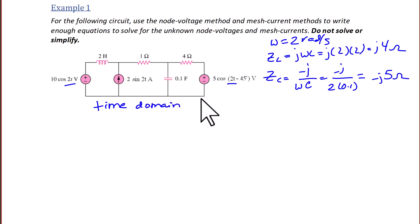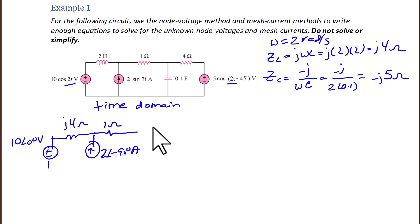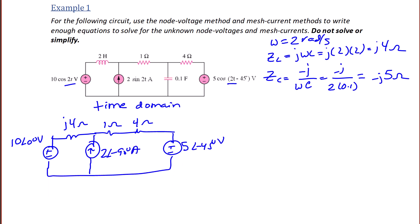Next we take this circuit drawn in the time domain and convert it to a circuit drawn in the frequency domain by writing the sources as phasors and the elements as impedances. The source on the left is 10∠0°. Then we have an inductor that is j4 ohms, a current source of 2∠−90° (because it's a sine, not a cosine), a 1 ohm resistor, a 4 ohm resistor, a voltage source of 5∠−45°, and the capacitor with a value of −j5 ohms.